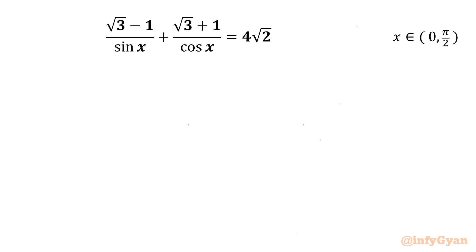Welcome back to Infigr my dear friends. Today in this video we are going to take up another challenging question from trigonometry. We have to solve: (√3 − 1)/sin x + (√3 + 1)/cos x = 4√2, where x lies in the interval (0, π/2) with endpoints excluded.